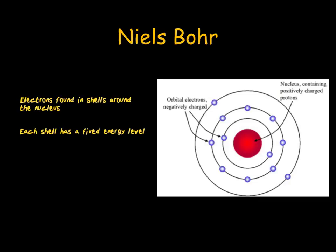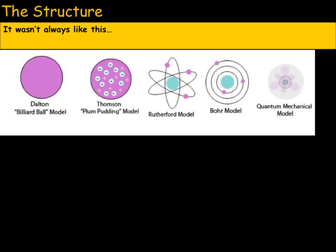However, it is important that you are able to draw all four models that we have just looked at. So that includes Dalton, Thompson, Rutherford and Bohr. As we can see, the model of the structure of the atom has changed many times over the last 200 years. Starting with Dalton's billiard ball model, moving on to Thompson's plum pudding model, through Rutherford and Bohr's model and then today into the quantum mechanic model.